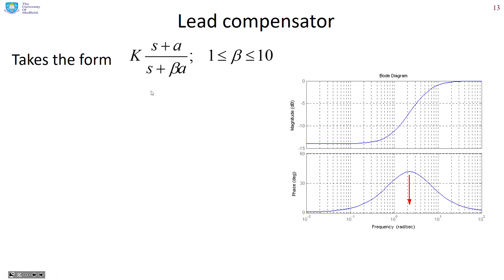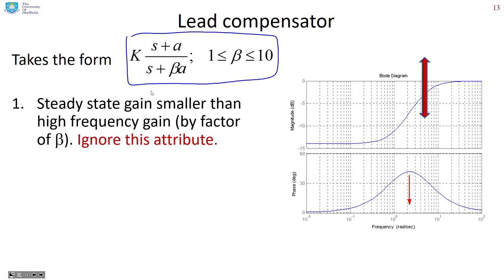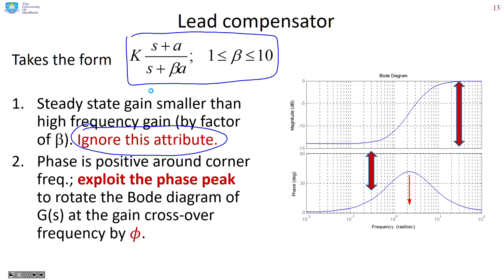What does a lead compensator look like? It's very similar to a lag, but the main difference is the pole is large and the zero is small. So in the frequency response, there is a low gain at low frequency compared to high frequency. Interestingly, we're going to ignore this attribute — it's the opposite of the lag. With the lag, the gain attribute was the one we wanted; with the lead, it's the one we ignore. With the lag, we tried to ignore the phase characteristic; with the lead, the phase characteristic is the one we want to exploit.